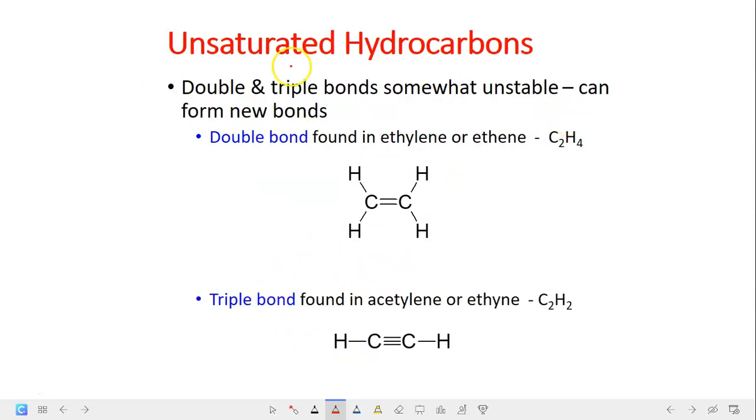And another one is unsaturated hydrocarbons in which there are presence of double bond and triple bonds. And they are unstable. It can undergo some reactions and they can form new bonds. The bonds can be broken to form a single bond. So this is unsaturated.